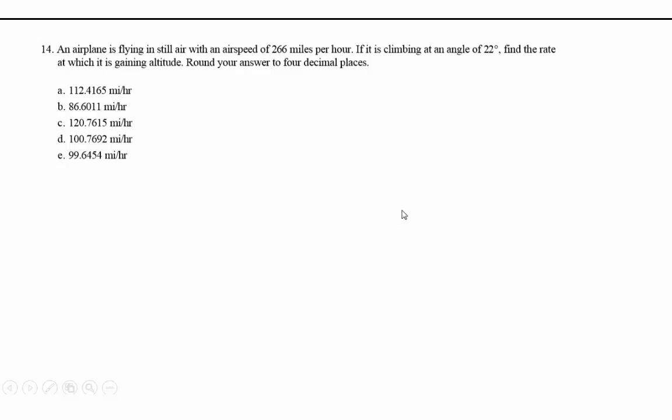As I'm reading this, I'm thinking that's a rate. Yeah, velocity, a rate, miles per hour. If it's climbing at an angle of 22 degrees, find the rate at which it's gaining altitude. We're asked to find the rate at which it's gaining altitude, so I guess that means that the height is increasing, right?